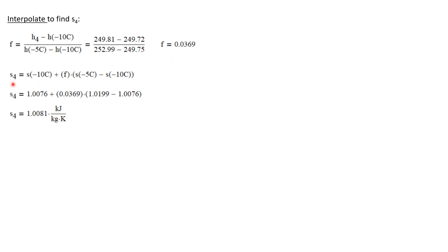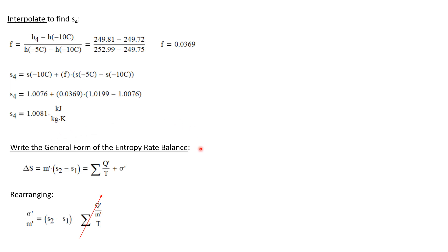Now I can calculate the entropy at state four. It's the entropy at minus 10 degrees C plus the interpolation factor times (the entropy at minus 5 degrees C minus the entropy at minus 10 degrees C). Using those table values, I calculate that the entropy at state four is 1.0081 kilojoules per kilogram K.